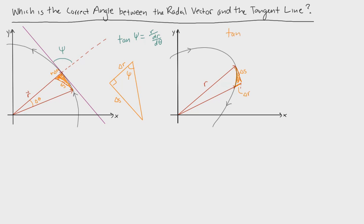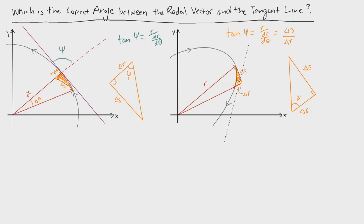We defined tangent phi as r dr/dtheta, or in terms of the arc and the change in radius, delta s over delta r. Drawing out that triangle to see where phi exists — since we found phi in terms of the ratio between delta s and delta r, this angle right here is going to be phi. With a tangent line to the path, since we define this angle phi here, that must be the same angle here, and if we extend that radius, angle phi is actually the same angle as before.